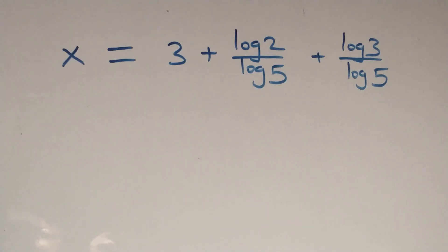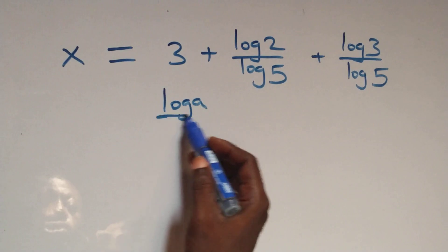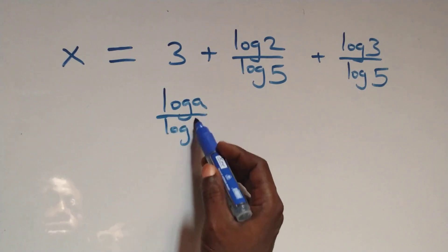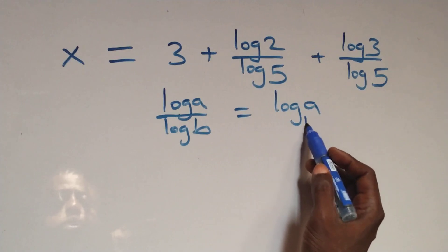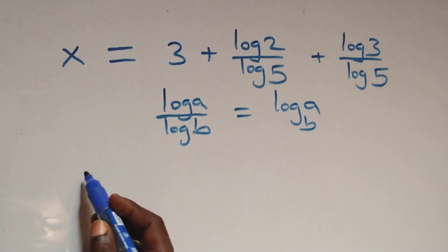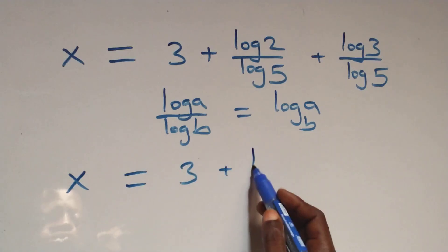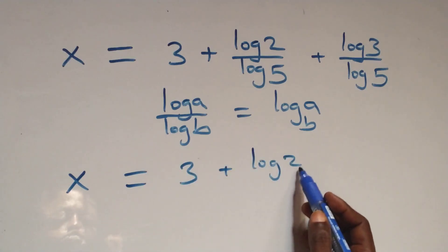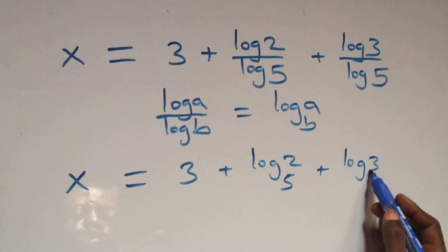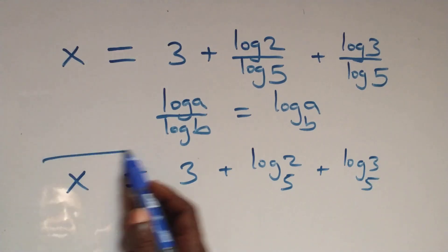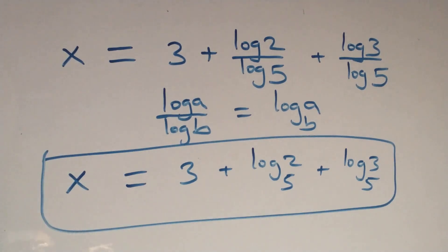The next step here, we apply the change of base formula: when we have log a over log b, this is the same thing as log a to base b. Then what we have here becomes x equals to 3 plus log 2 base 5 plus log 3 base 5. That is the value of x: 3 plus log₅2 plus log₅3.